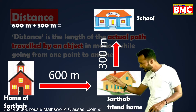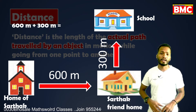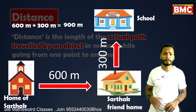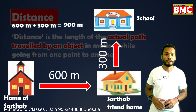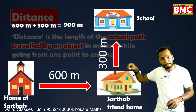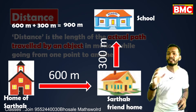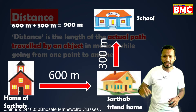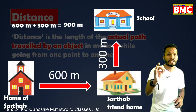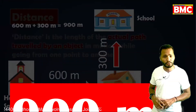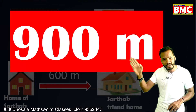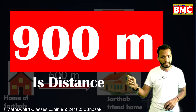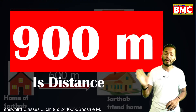The two segments of the path are 600 meters and 300 meters. So the total is 600 meters plus 300 meters, which equals 900 meters. So 900 meters is the total actual length of the path that Sartak traveled. Therefore, 900 meters is the distance traveled by Sartak.